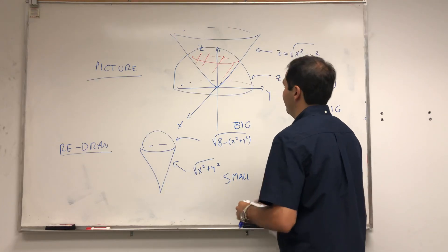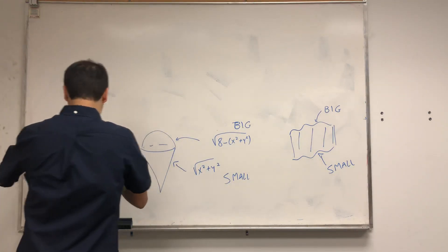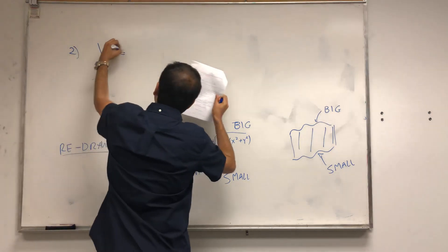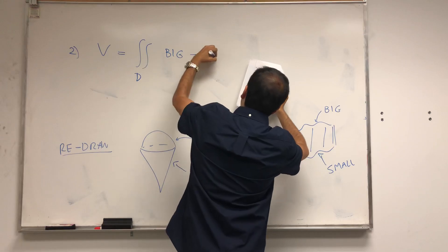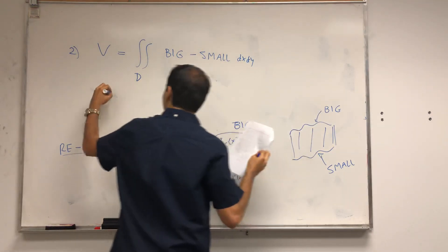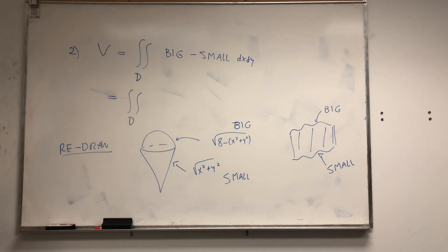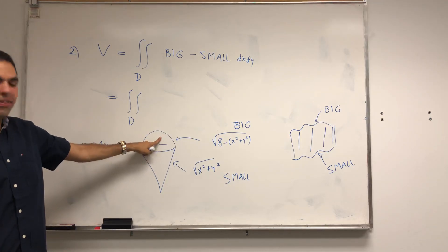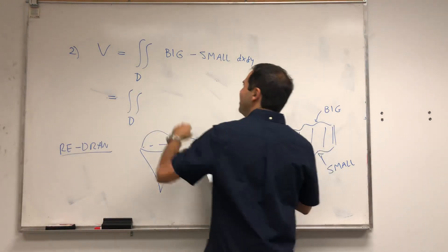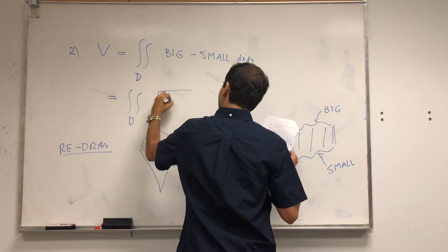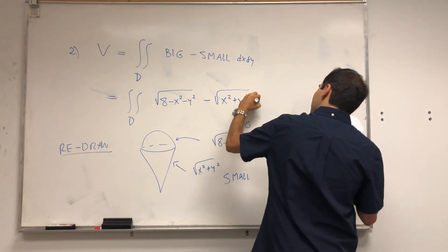So the volume is the double integral over some region D of the big minus small, dx dy. Here the picture is very important: you might think the cone is bigger than the sphere, but it's actually the opposite — the sphere is bigger than the cone. So this becomes the double integral over D of square root of 8 minus x squared minus y squared minus square root of x squared plus y squared, dx dy.